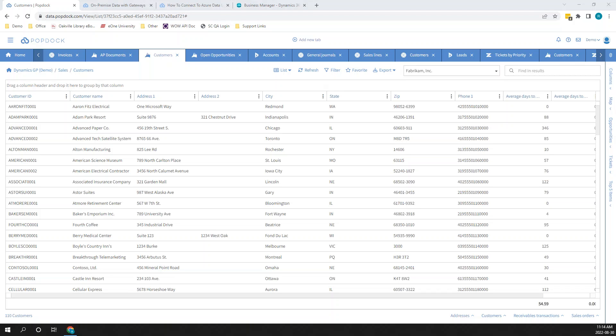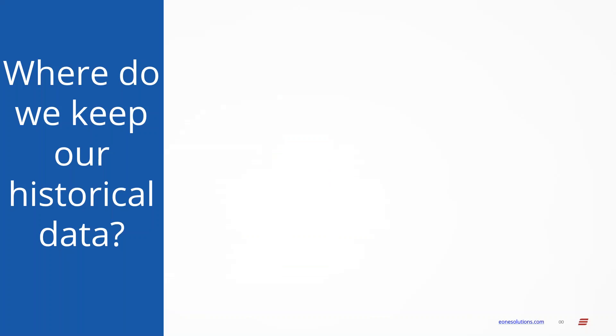So we're really preparing our data for future use, making sure we're getting lists that people care about that are going to be relevant when we go forward. We're not just creating data for the sake of creating data. So the next thing to talk about is where do we actually keep this data? From our perspective, when it comes to Dynamics GP, there are really three main choices for what you can do with your data from a historical standpoint.